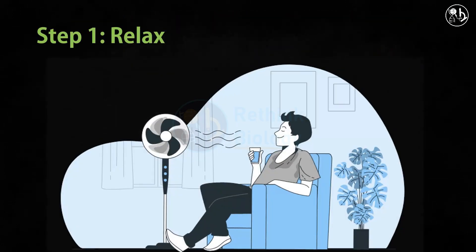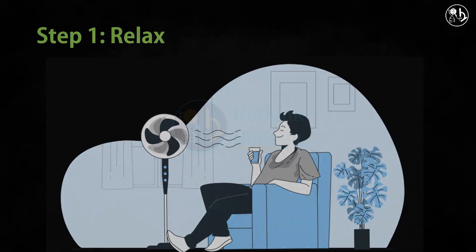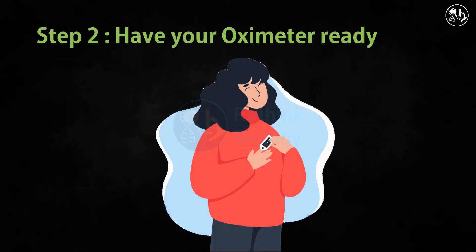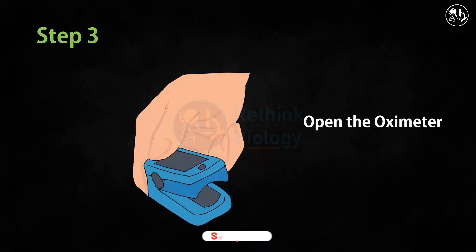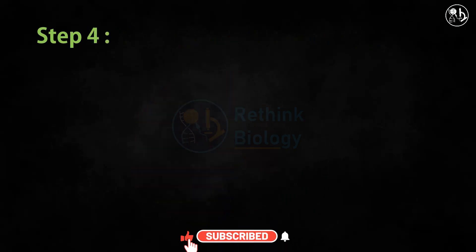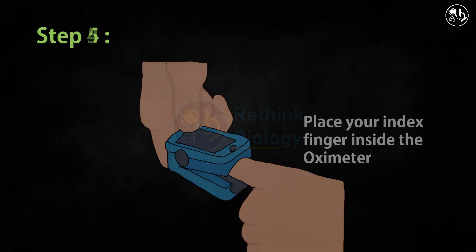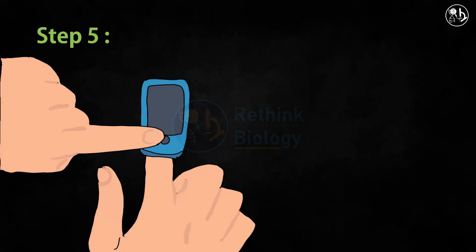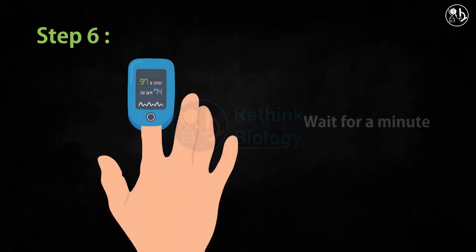First, rest for at least 5 minutes before taking your measurement and keep your oximeter handy. Then open the oximeter by pressing the clip and place your index finger inside the oximeter. Next, switch on the oximeter and be steady for at least a minute.